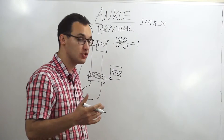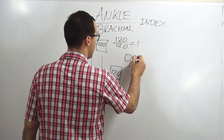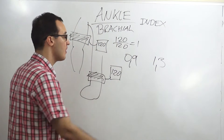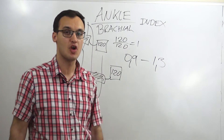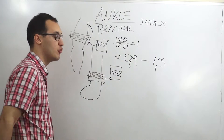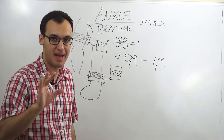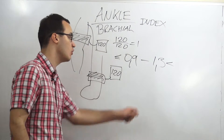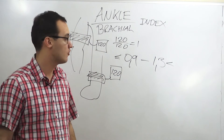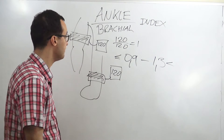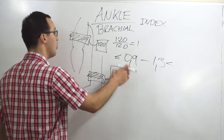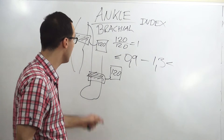Two numbers you need to remember are 0.9 and 1.3. Everything between these two numbers is usually normal. When you are below 0.9, it becomes abnormal — that's pathological. When it is more than 1.3, that's also not normal. Remember: you always divide the lower leg pressure by the upper arm pressure, not the other way around.